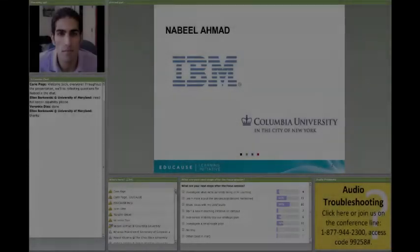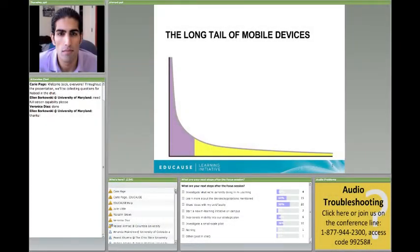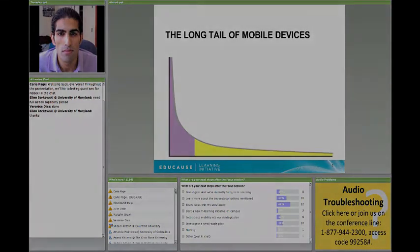Before we go too deep, because this is more of a general session, what I want to talk about is the long tail of mobile devices. For those of you in the United States and probably North America, you know of companies like Amazon and Netflix, and they have this business model called the long tail. Basically, if we look at Amazon, they get about 20% of their overall sales from the best-selling books. But the other 80% comes from just selling one of everything.